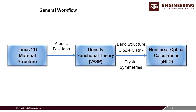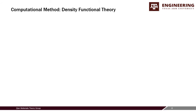For the general workflow of this study, the atomic positions of the Janus 2D material are fed into VASP — the Vienna Ab initio Simulation Package — which is used for DFT calculations. This calculates the ground state, generating the band structure, the transition dipole matrix elements, and the crystal symmetries present in the system. These outputs then feed into our in-house code for calculating the nonlinear optical properties of the material.